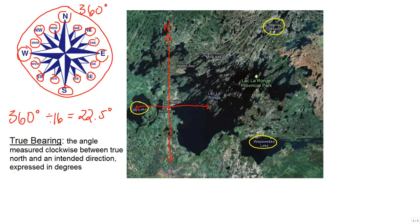Let's quickly review what a true bearing is. True bearing is the angle measured clockwise between true north and an intended direction, expressed in degrees. So that means our angle from north to our intended destination — the first one will be Stanley Mission — is called our true bearing.